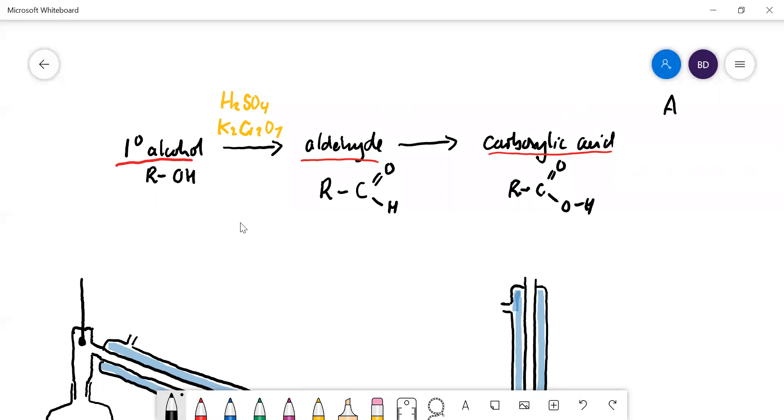This relates to AQA required practical five, I think it's five A, where you get ethanol and you oxidize it. So here's ethanol. First, if you oxidize it a bit, you're going to get ethanal.